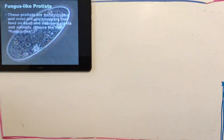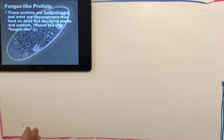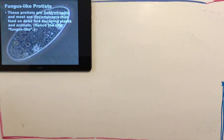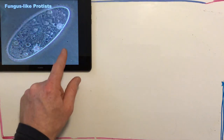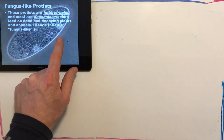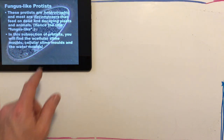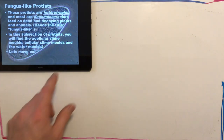Our next category is fungus-like protists. They're heterotrophs as well — they have to eat other things to get their energy. Most of these are decomposers, just like fungi: dead and decaying stuff and waste is what they eat. You'll find different types here including slime molds, cellular and acellular slime molds, and water molds.